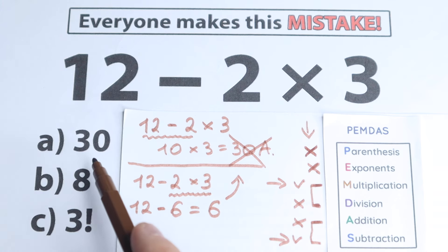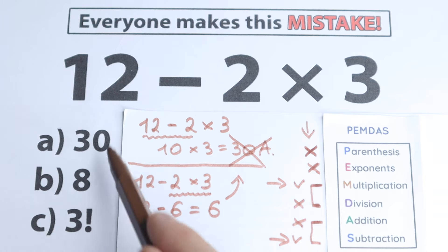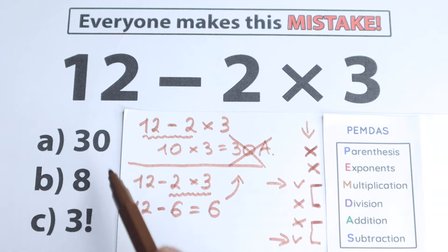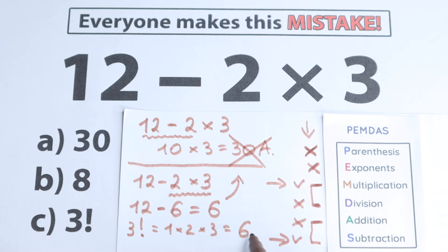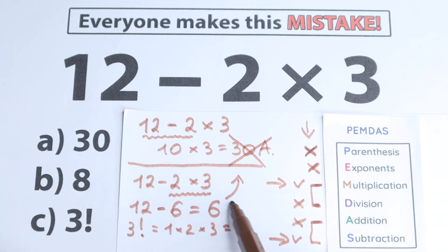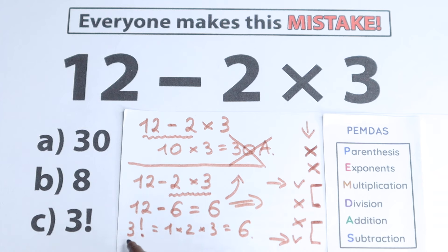What about option A (30) and option B (8)? Neither matches 6. What about option C — 3 factorial? We need to know that 3 factorial is the product from 1 to 3: 1 times 2 times 3, which equals 6. So 3 factorial equals 6 — the same as our answer. The correct answer to this question is 6, solved according to the correct order of operations. According to this test, our answer is option C.